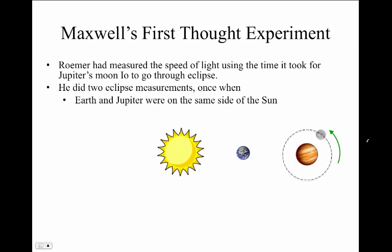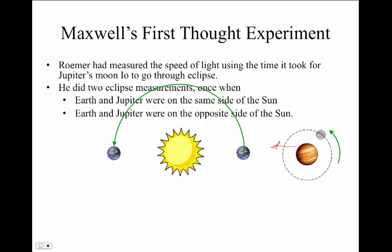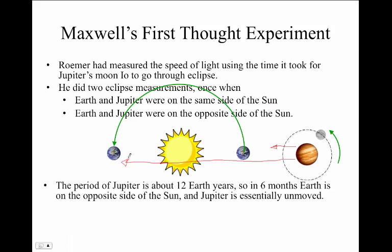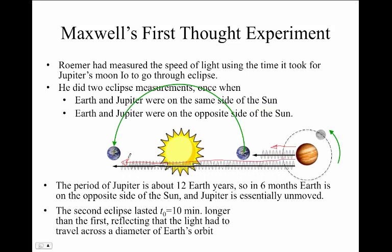Roemer did eclipse measurements at two different times: once when Earth and Jupiter were on the same side of the Sun, and light from Io nearly had to propagate to Earth this far; the second time was when Earth and Jupiter were on opposite sides of the Sun, and light from Io had to get all the way over here to Earth. The period of Jupiter is approximately 12 Earth years, so in the six months necessary for Earth to go on the opposite side of the Sun, the location of Jupiter is essentially unmoved.